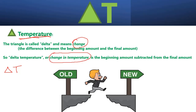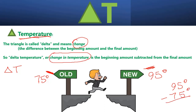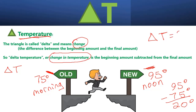Delta T is going to be the ending amount minus the beginning amount. So if over here it is 95 degrees, and it started out in the morning at 75 degrees, then you would take 95 degrees minus 75 degrees, and the change is 20 degrees. So in the morning it was 75 degrees, and at noon it was 95 degrees, so the change in temperature — the delta T — between morning and noon was 20 degrees.